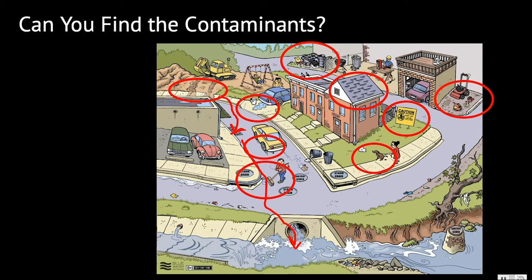Someone is sweeping garbage into a storm drain like it's a garbage can — do they know that garbage goes directly to the river? That's a lot of places contaminants can come from. No wonder our oceans are declining and our salmon and orcas are struggling to survive. What can be done?